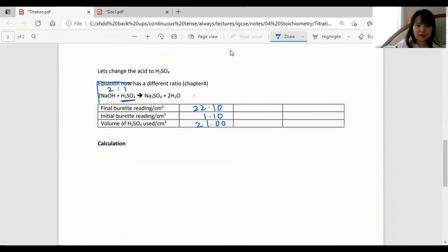Let's say we get a titration value of 21 centimeter cubes.